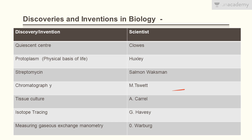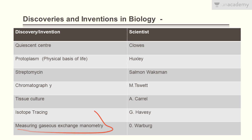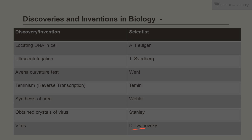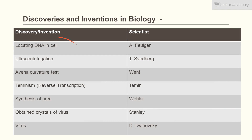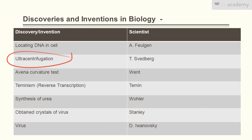Tissue culture was discovered by A. Carrel. Isotope tracing was discovered by G. Hevesy. Measuring gaseous exchange — manometry — was invented by O. Warburg. Locating DNA in a cell was invented by A. Feulgen. Ultracentrifugation was invented by T. Svedberg.